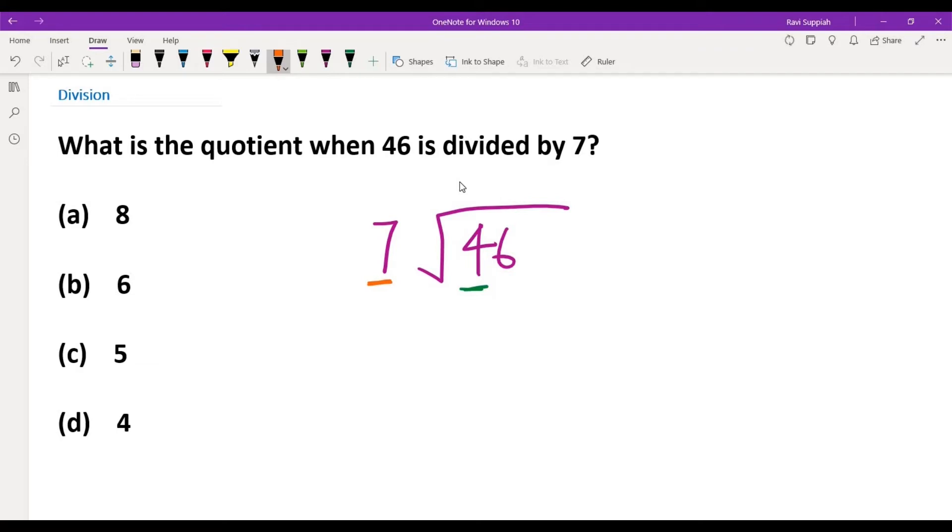Is 7 bigger or smaller than 4? Correct, 7 is bigger than 4. So in that case, what we need to do is we now need to look at the next digit together with the first digit. Previously we were just looking at 4. Now what we need to do is we need to look at both 4 and 6 together. Now what do you see? You see that 7 is smaller than 46.